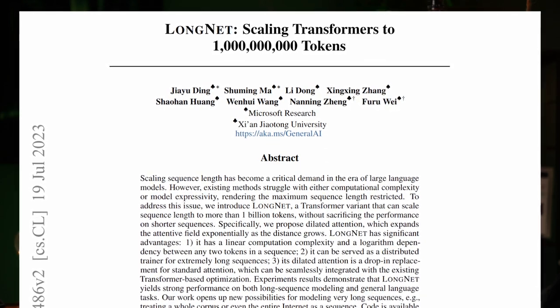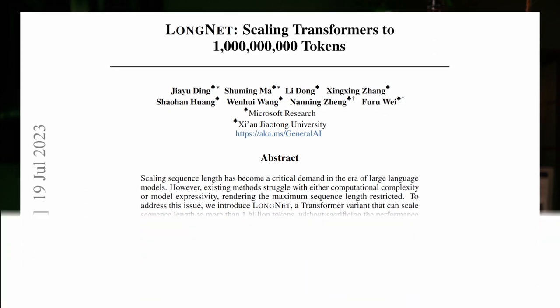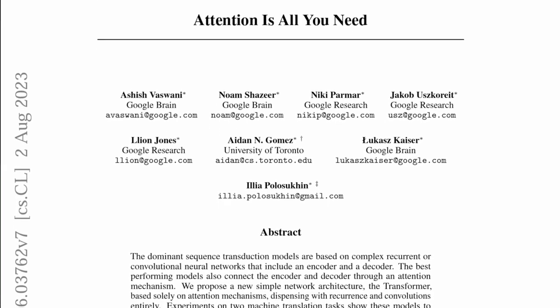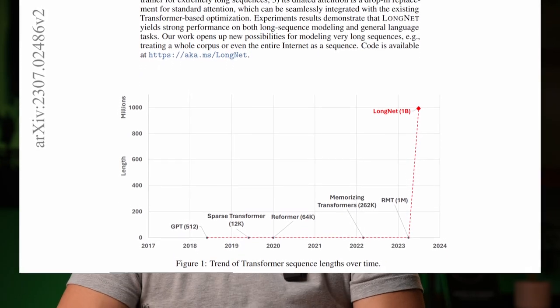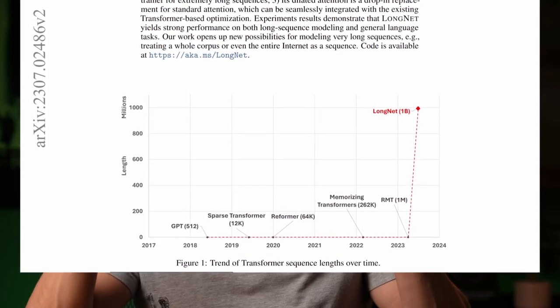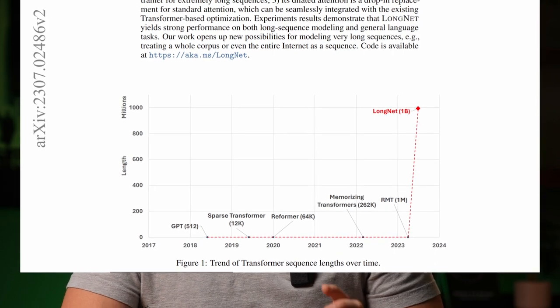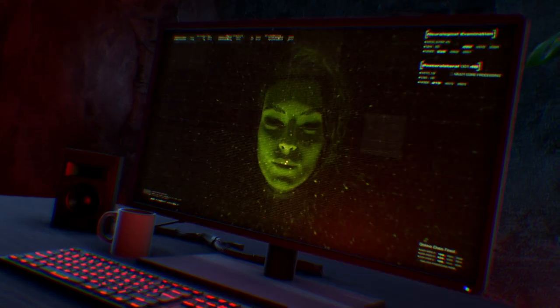Dilated attention is an evolution of Google's 2017 self-attention mechanism and it changes everything. LongNet can process up to 1 billion tokens of information in its context window — its short-term memory. This is orders of magnitude more than the large context models out there right now, and a huge step toward AGI and superintelligence.